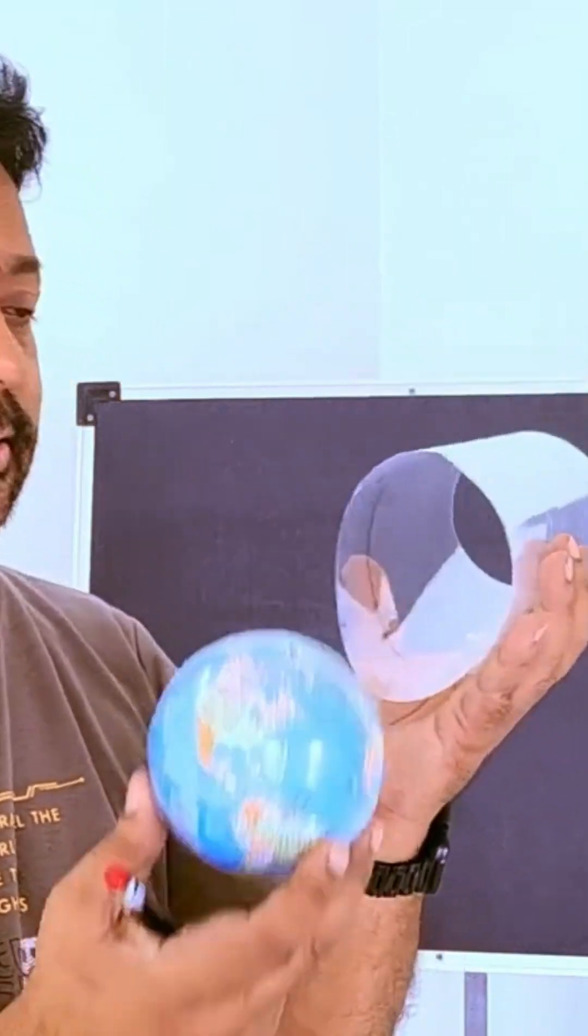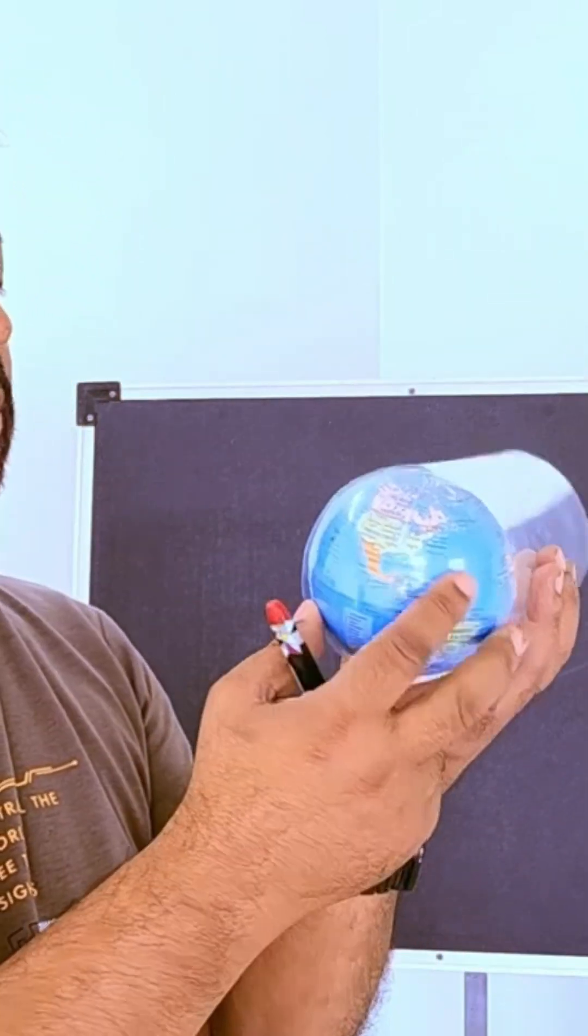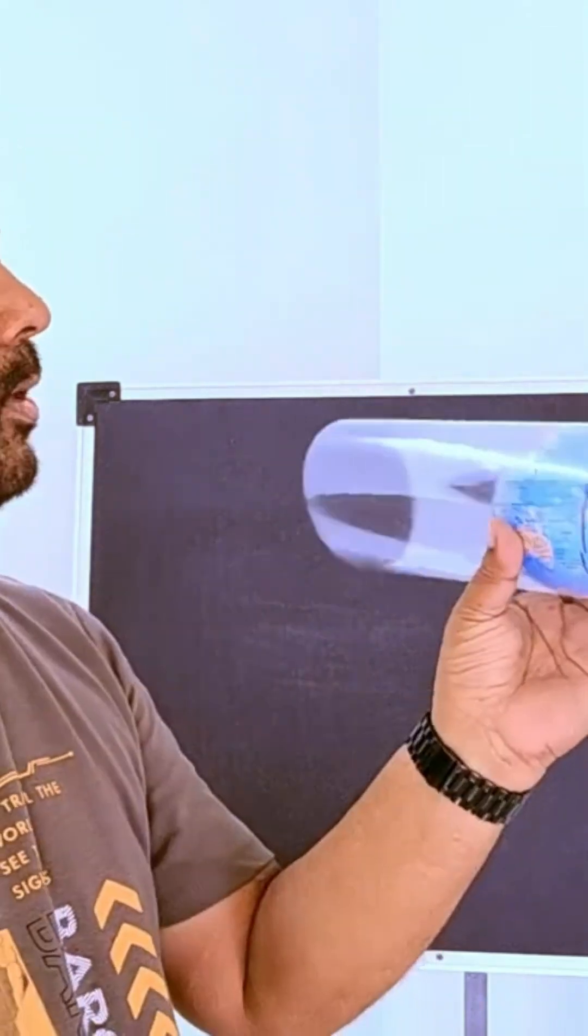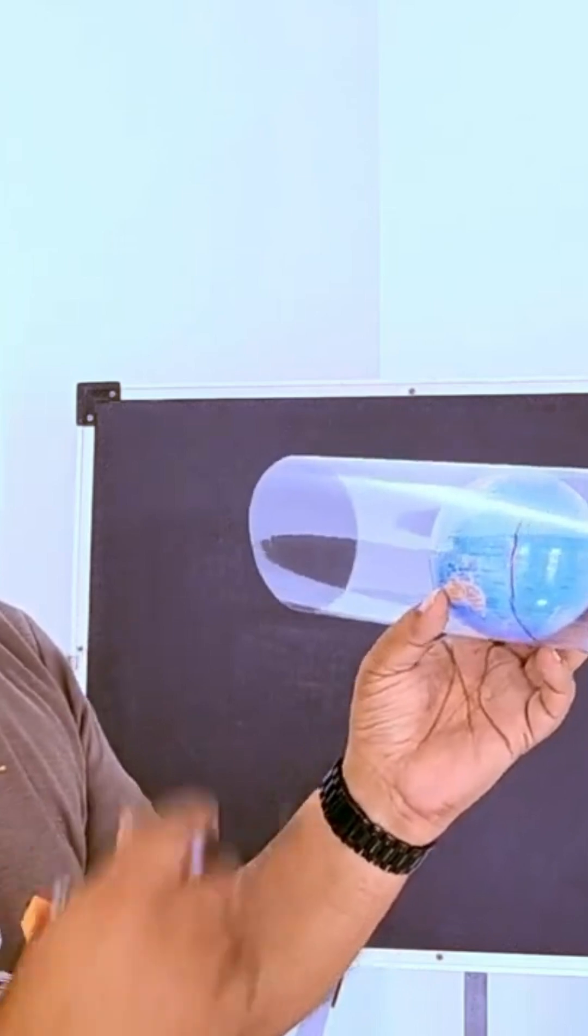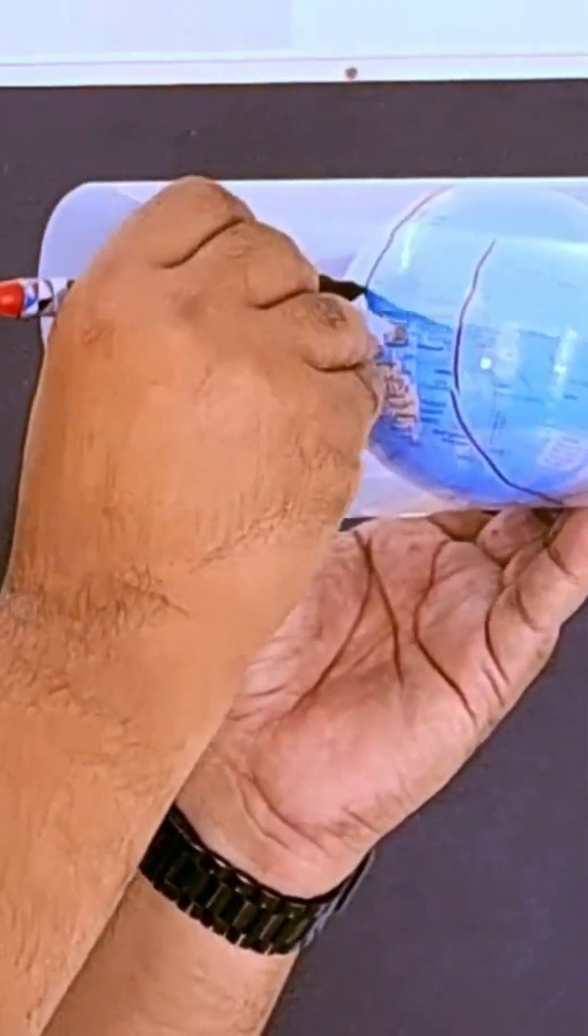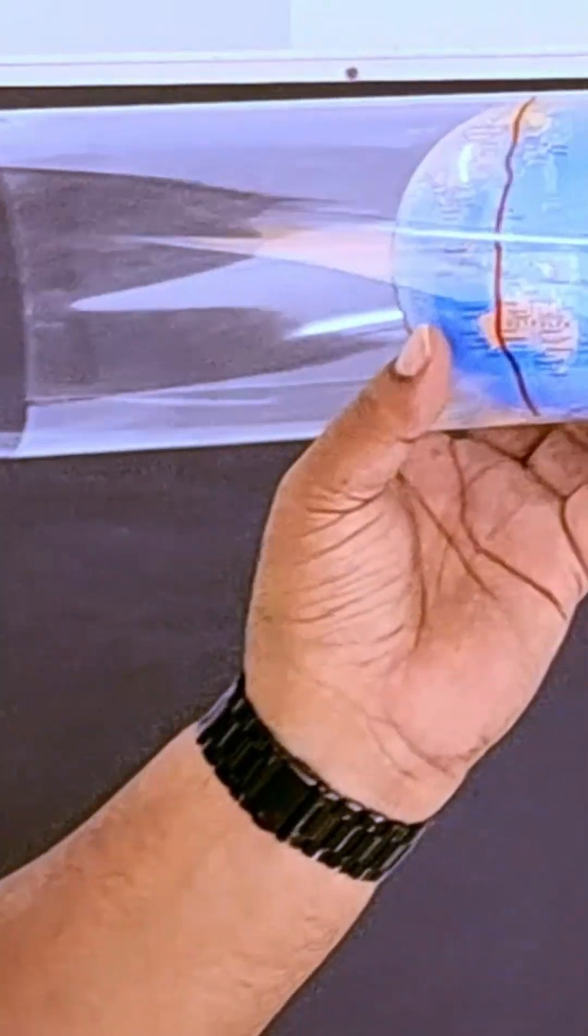We turn the cylinder 90 degrees and put the globe in. By doing that, you'll see now the globe is being touched from pole to pole, not the equatorial region. You can see that this is the position where the globe is touching the cylinder.